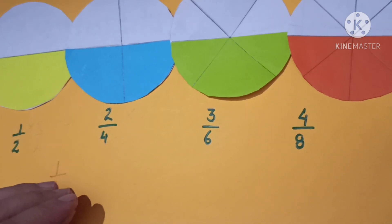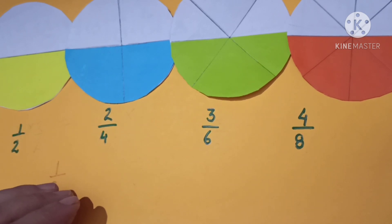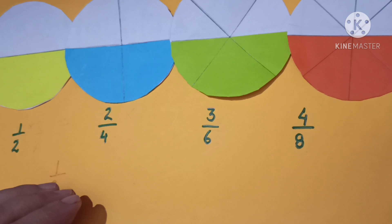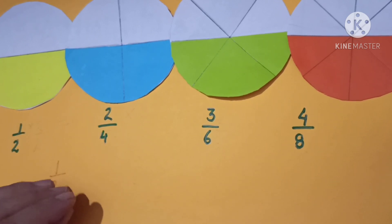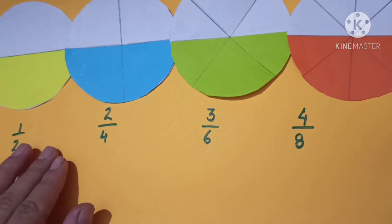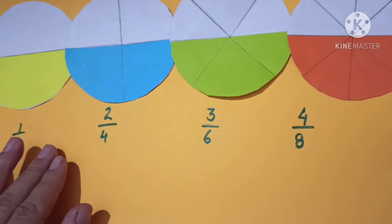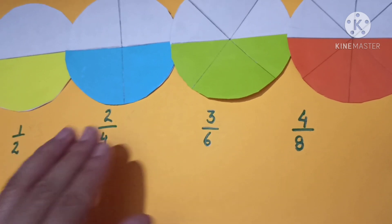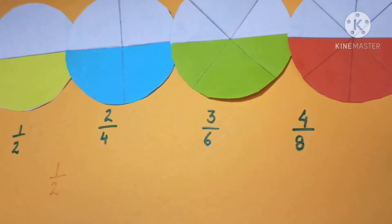So children, I hope now you know what equivalent fractions are. Now suppose you have been given a fraction and you are asked to find its equivalent fraction — how will you find it? For example, if I have to find the equivalent fraction of one by two, you know the equivalents are two by four, three by six, four by eight — but suppose you don't know, then how will you find it?